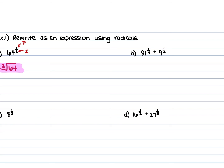For example b, we have 81 to the power of one-fourth plus 9 to the power of one-half. The 1 on both of these is going to be your power or exponent on the number, and the denominator is your index for both. This gives us the fourth root of 81 plus the square root of 9. With that square root of 9, you'll notice it does not have an index — and that's because when a radical does not have an index, it's understood to be 2.